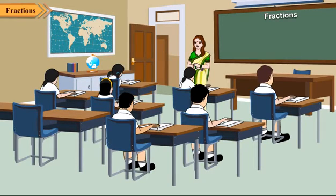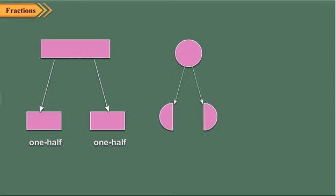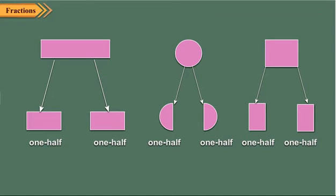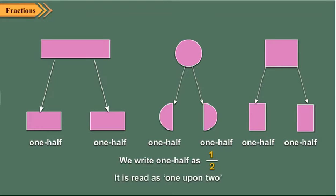Children, observe the shapes shown here. Each shape has been divided into two equal parts. Each part is one half of the whole. If you add these parts again, you get a whole. We write one half as one upon two, and it is read as one upon two. Two halves together make a whole.